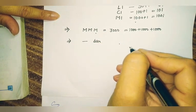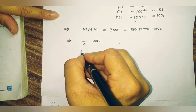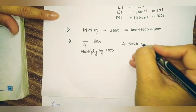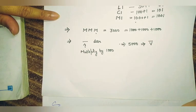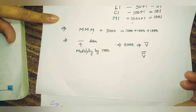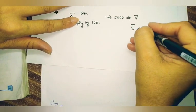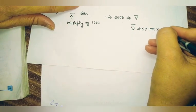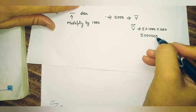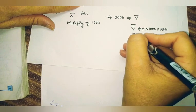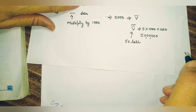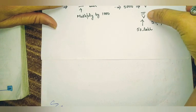This bar over a symbol means it is multiplied by 1000. So if we want to write 5000, we write V with a bar above it, meaning 5 times 1000 equals 5000. If we repeat the bar two times above a number, for example V with two bars, the first bar multiplies by 1000 and the second bar multiplies by 1000 again, giving us 5 times 1000 times 1000 equals 50 lakh.